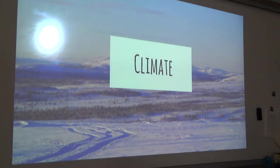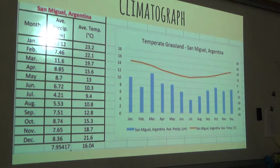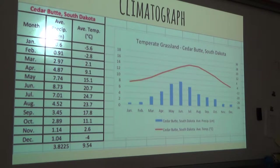The growing season is met with a dormant season in the winter, with no plants able to grow because of the cold temperatures. However, the snow that comes in the dormant season provides needed moisture for the beginning of the next growing season. Here we have the climatographs — this one is for San Miguel, Argentina, where precipitation stays about average. The next one is for Cedar Butte, South Dakota, where there are higher temperatures and lower precipitation.